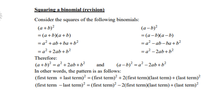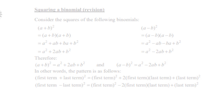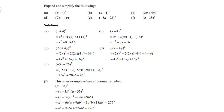Examples — expand and simplify: a) (x + 4)²: square x to get x², square 4 to get 16, middle term is x times 4 times 2 = 8x, so x² + 8x + 16. b) (x − 4)²: x², positive 16, middle term x times −4 times 2 = −8x. c) (2x + 4y)²: 4x², 16y², middle term 2x times 4y times 2 = 16xy.